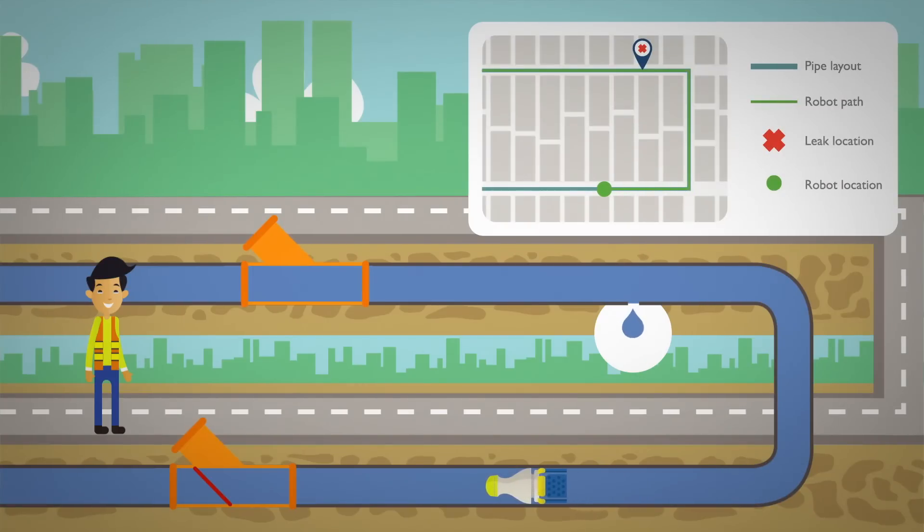It records where leaks are on the robot's path. When a robot arrives at the exit point, it will be captured by a net. The technician can then take the robot out of the pipe and receive the leak map.